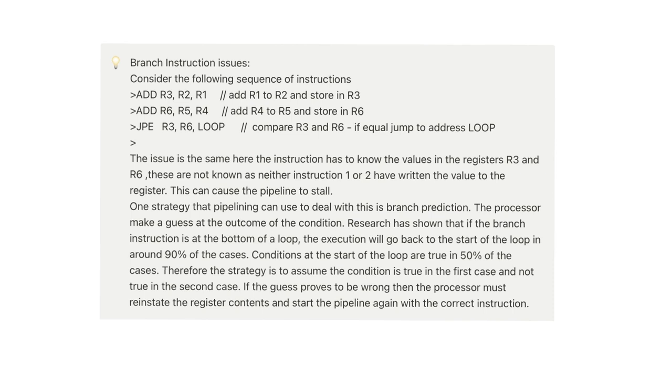So let's look at one more case. So consider the following sequence of instructions. Add R3, R2, R1. Add R6, R5, R4. JPE, which is jump if equal, R3, R6 loop. So the first one adds R1 to R2 and then stores it in R3. The second one adds R4 to R5 and stores it in R6. The third one compares R3 and R6 and if they are equal, it jumps to the address loop. In this case, it's not an operand. It's just where the loop lies. The loop is basically an address, so it will jump to that position where the loop begins.